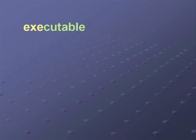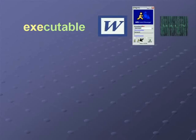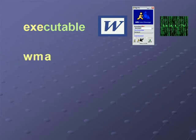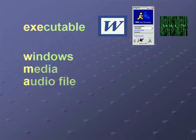A very important extension is EXE. This is just an abbreviation of the word "executable," which means this is a file that can start things — in other words, a program. Another example is WMA, an abbreviation of Windows Media Audio. These files are sound files that play in many programs and media players.